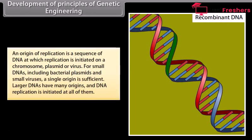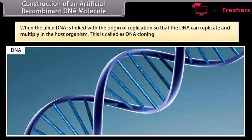The host DNA combined with foreign DNA or artificial DNA is called recombinant DNA. An origin of replication is a sequence of DNA at which replication is initiated on a chromosome, plasmid, or virus. For small DNAs including bacterial plasmids and small viruses, a single origin is sufficient. Larger DNAs have many origins and DNA replication is initiated at all of them. When the alien DNA is linked with the origin of replication so that the DNA can replicate and multiply in the host organism, this is called DNA cloning.